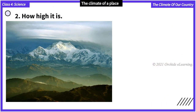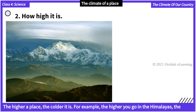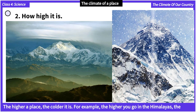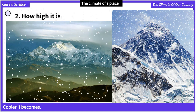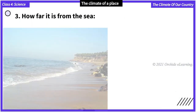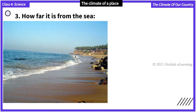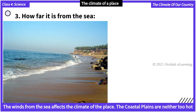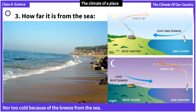Number two, how high it is — the higher a place, the colder it is. For example, the higher you go in the Himalayas, the cooler it becomes. Number three, how far it is from the sea. The winds from the sea affect the climate of the place. The coastal plains are neither too hot nor too cold because of the breeze from the sea.